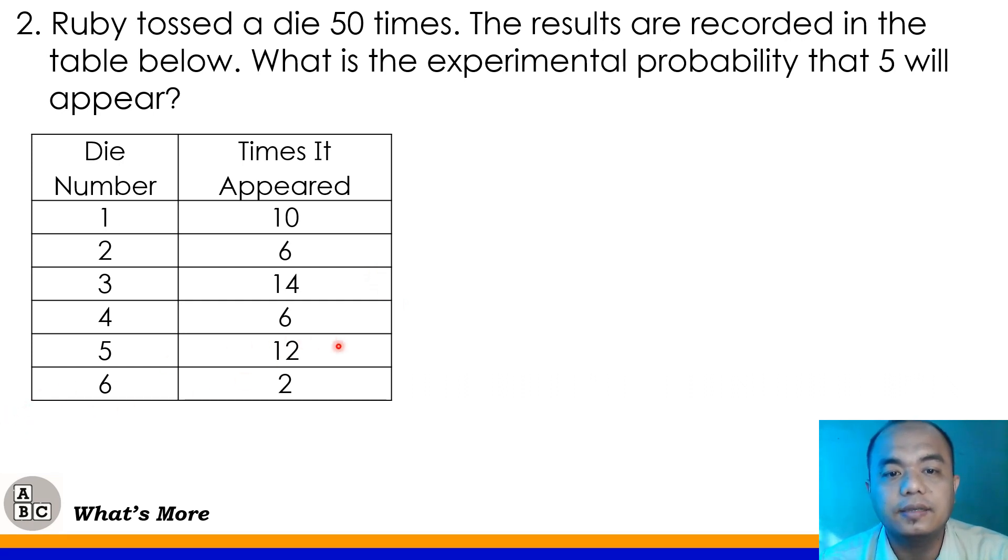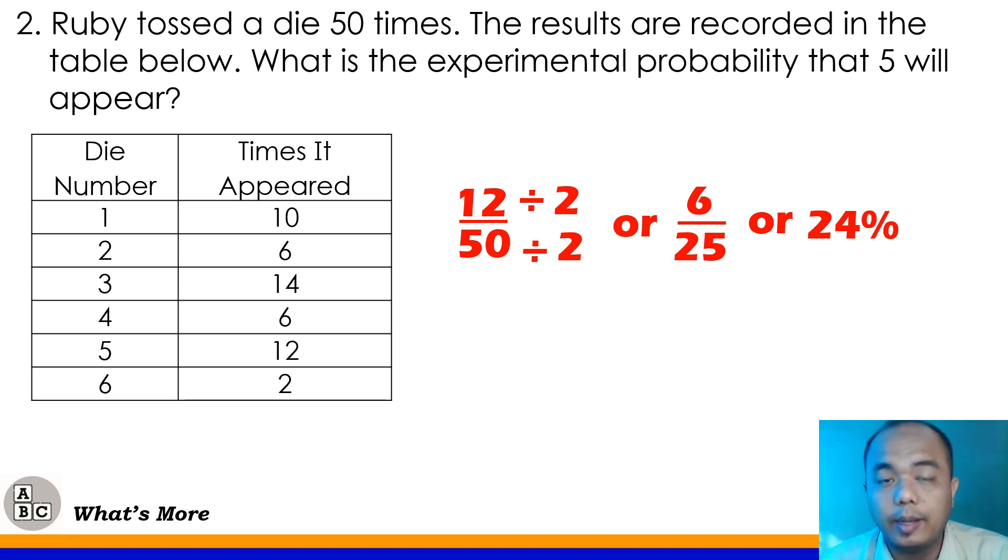The question here class is, what is the experimental probability that 5 will appear again? So, we will use the data from our table. How many times did 5 appear class? Very good! 12. So, our numerator is 12. How many times was the die rolled? Very good! We have 50. So, this is now our experimental probability. But, we need to reduce this to lowest term by dividing the numbers by its GCF, or greatest common factor. What is the greatest common factor of 12 and 50? Very good! We have 2. 12 divided by 2 would give you 6. And 50 divided by 2 would give you 25. So, we can convert that again to percent form. 6 divided by 25 times 100 will give you 24%. So, the experimental probability that number 5 will appear again in tossing the die is 24% or 6 over 25 in fraction form.